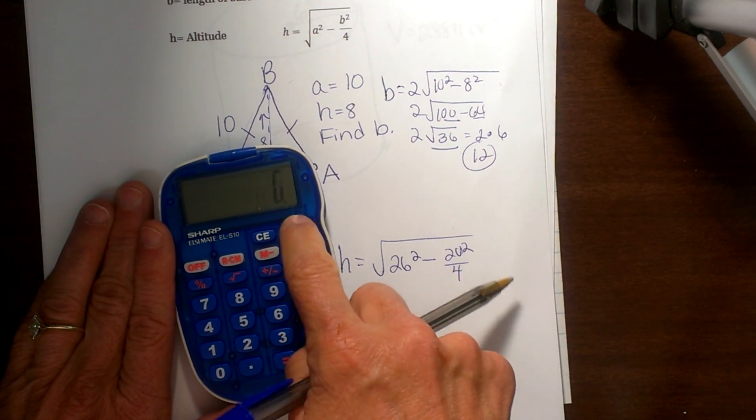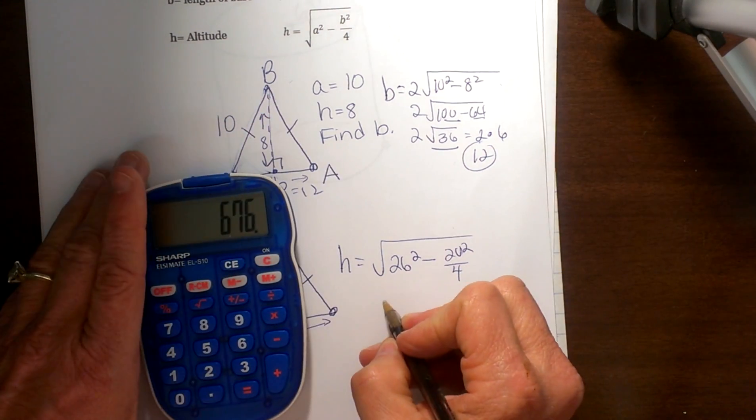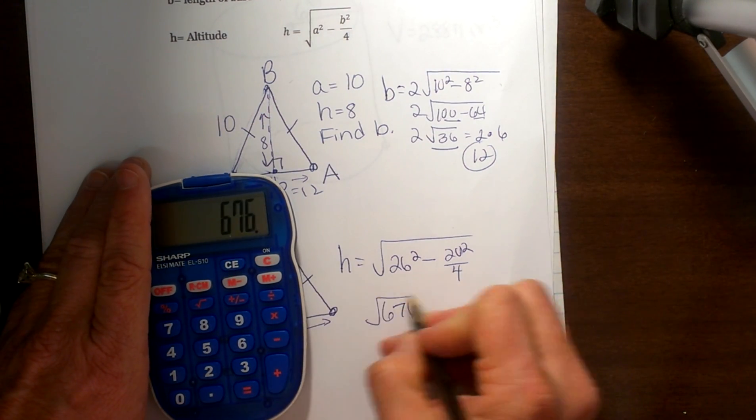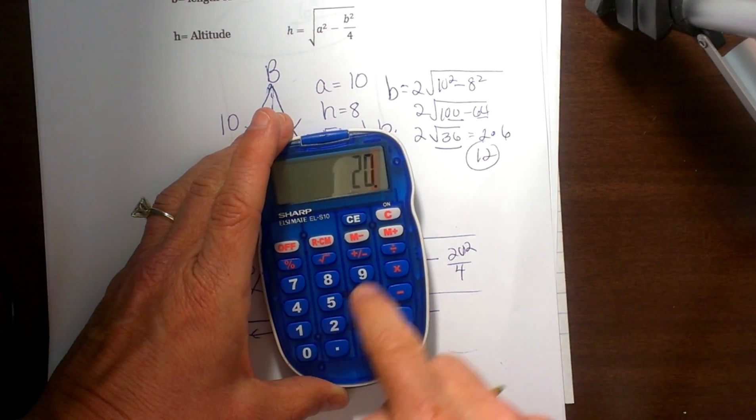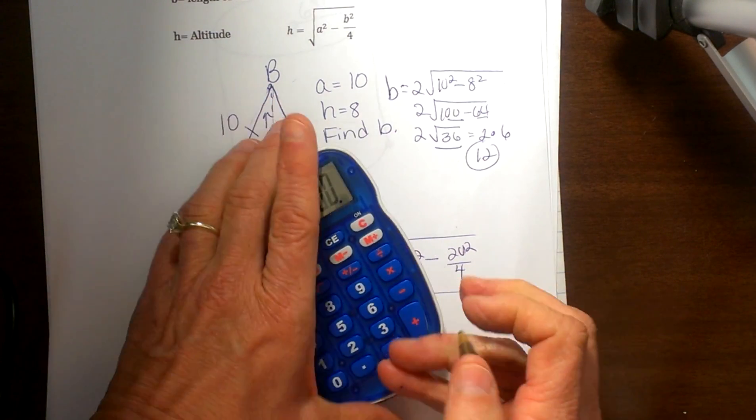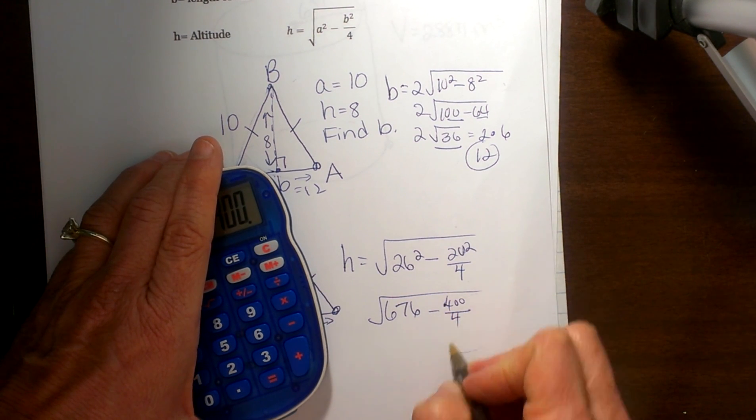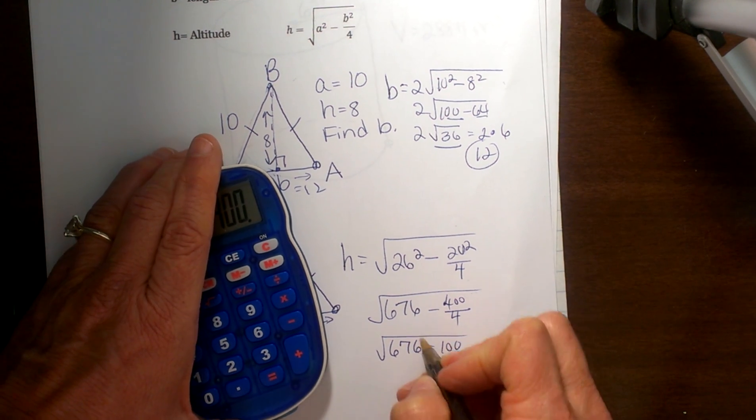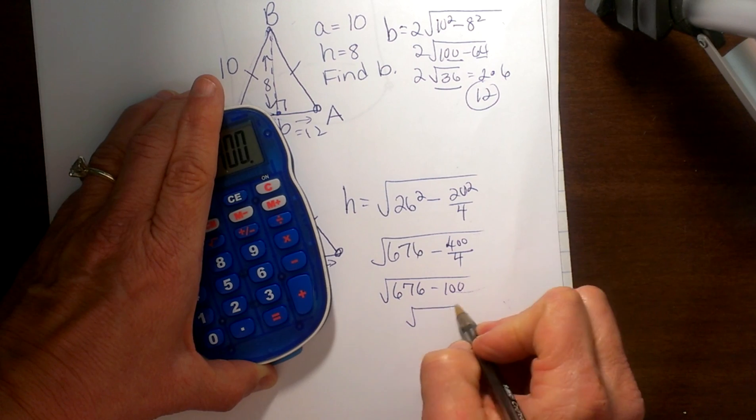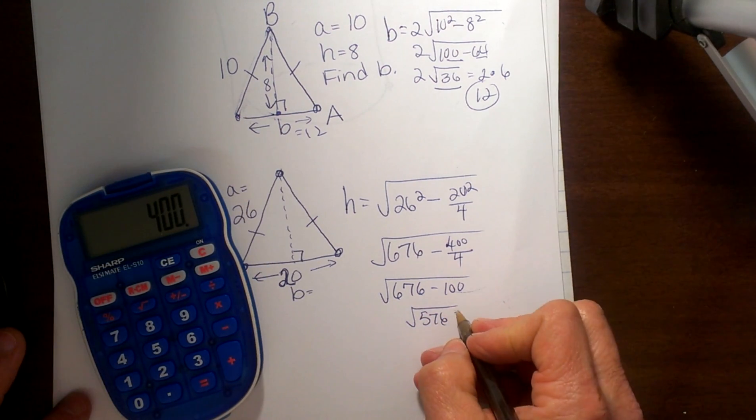26 squared equals 26 times 26, or 676, minus 20 times 20 is 400, and 400 all divided by 4 is going to give me 100. Let's see, that is 676 minus 100, which equals the square root of 576, and that would be my height.